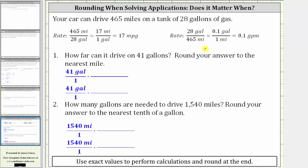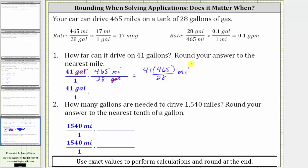Now let's answer the two questions. First, how far can the car drive on 41 gallons? We begin by writing 41 gallons as a fraction with a denominator of one. Because we want gallons to simplify out, we use the rate with gallons in the denominator. So we should use the exact rate of 465 miles per 28 gallons, and multiply: 465 miles over 28 gallons. Notice how the units of gallons simplify out, leaving us with 41 times 465 divided by 28, and the units are miles. This is the correct way to answer the question, because we are using the exact rate.